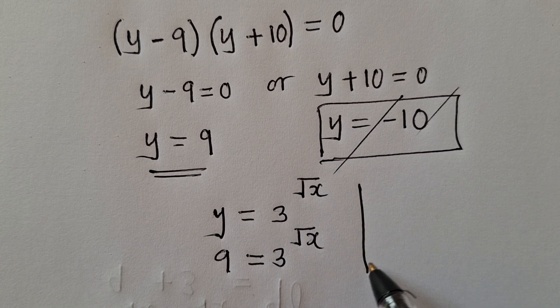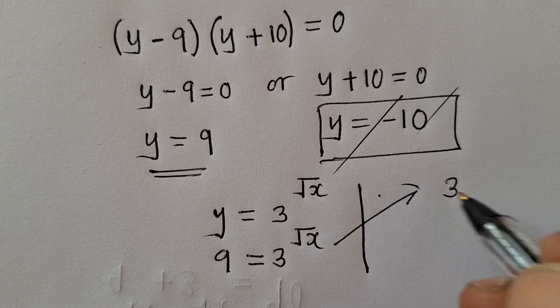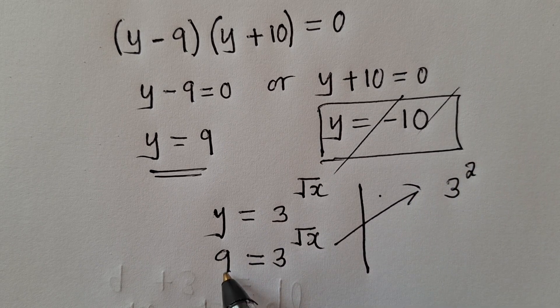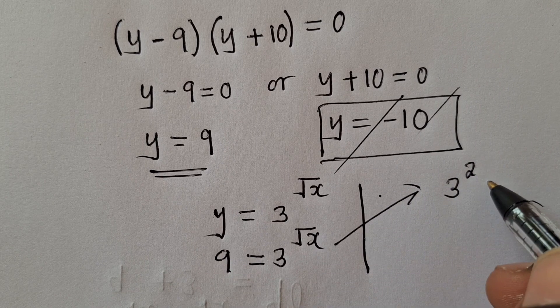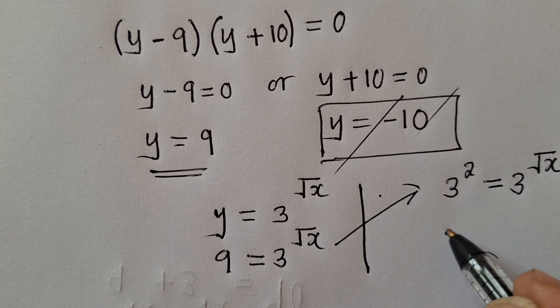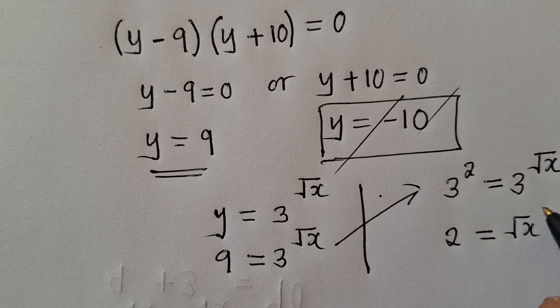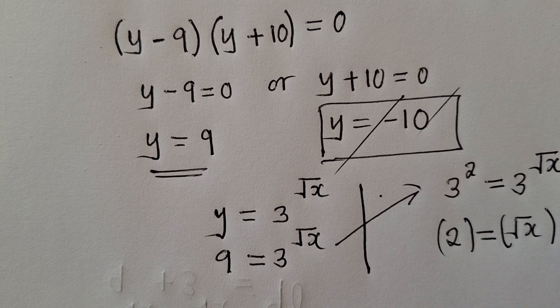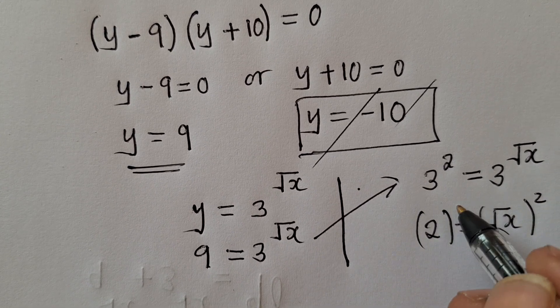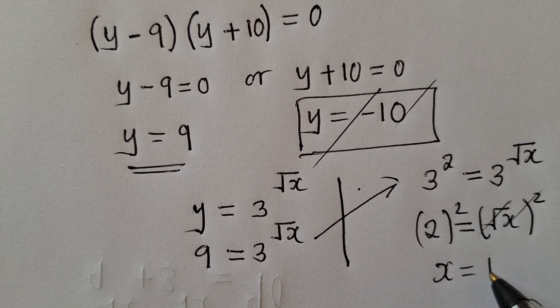Okay, so from this stage we balance the bases. We know that this 9 is 3 power 2, which is equal to 3 power square root of x. So we can say 2 is equal to square root of x. We get rid of the square root by introducing power 2. This and this will go. x will simply be equal to 4.